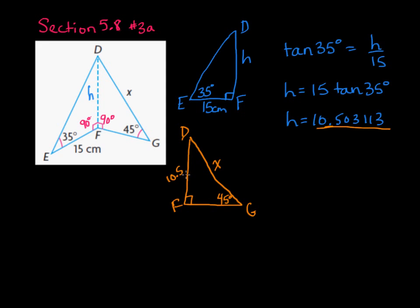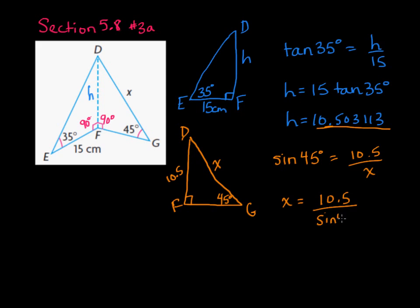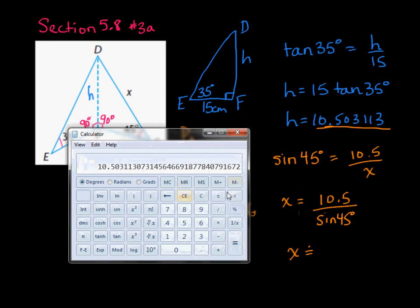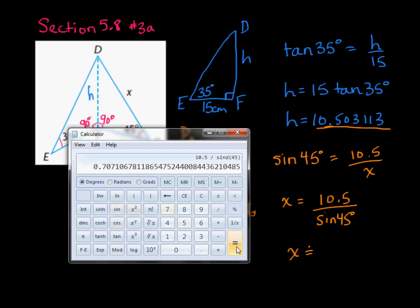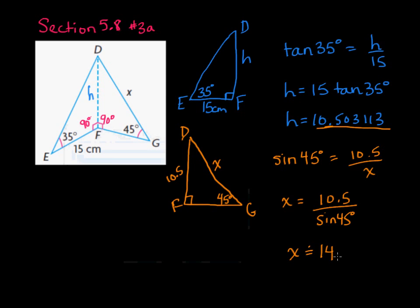Based on the 45-degree reference angle, 10.5 is the opposite side and x is the hypotenuse, so we use the sine ratio: sin(45°) = 10.5/x, which rearranges to x = 10.5 ÷ sin(45°). Using our calculator, we get approximately 14.849, or rounded to one decimal place, x ≈ 14.8 centimeters.